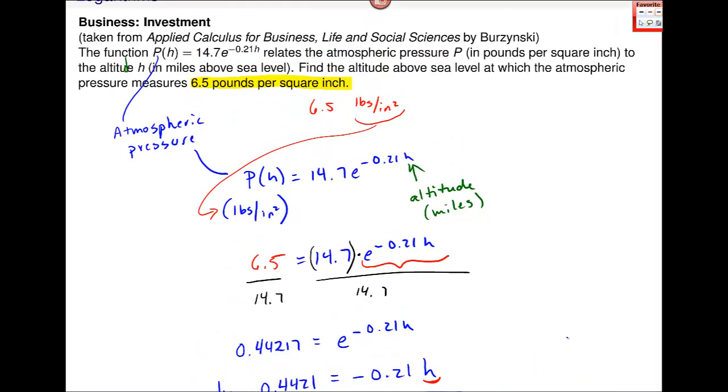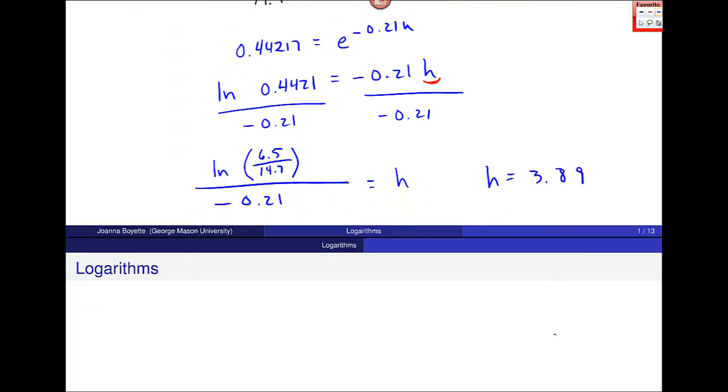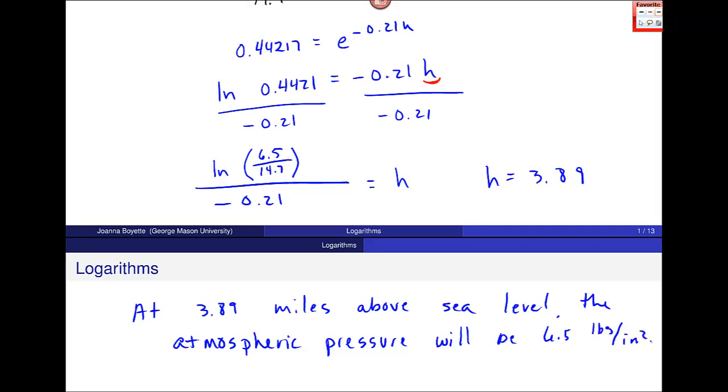Now I have to go back up here. I believe that's in miles above sea level. So in terms of a sentence answer, at 3.89 miles above sea level, the atmospheric pressure will be this 6.5 pounds per square inch. Let me know if you have questions. Thank you.